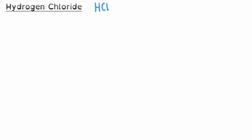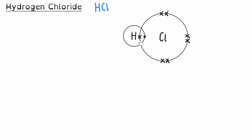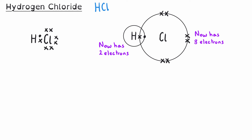Hydrogen chloride has the formula HCl — one hydrogen atom with one electron in its outer shell and one chlorine atom with seven electrons. When those atoms bond, their shells overlap and the hydrogen gains a share in the two electrons in the middle, filling its outer shell. Chlorine has the shared pair plus three non-bonding pairs, giving it eight electrons. The displayed formula shows a single line between H and Cl, and the ball and stick diagram shows a larger green chlorine atom connected to a smaller white hydrogen atom by a single stick.